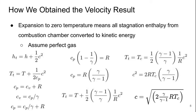Okay, welcome to part two of lecture two of aerospace propulsion. So here's how we obtain the velocity result, which is the equation in the bottom right of the screen here. If we're doing expansion to zero temperature, that means all the stagnation enthalpy from the combustion chamber ends up getting converted into kinetic energy, and we're assuming that we're dealing with a perfect gas.